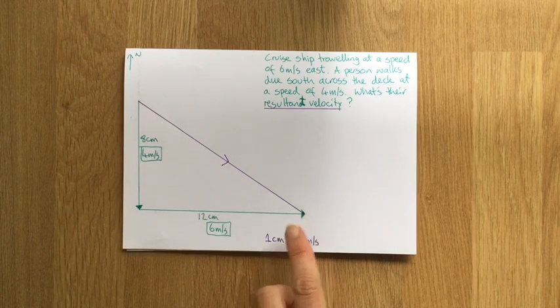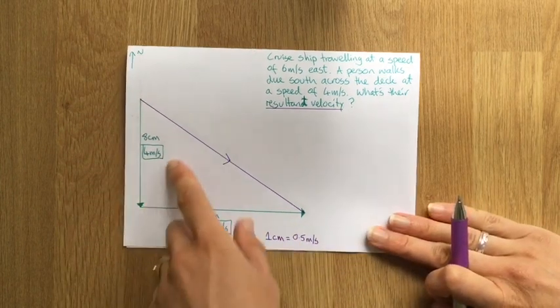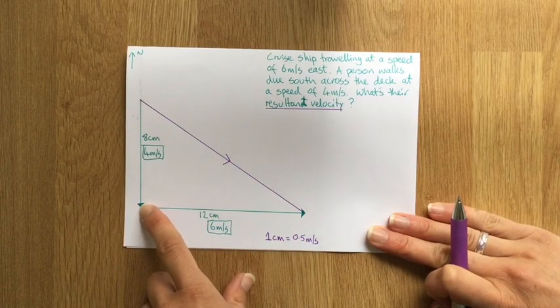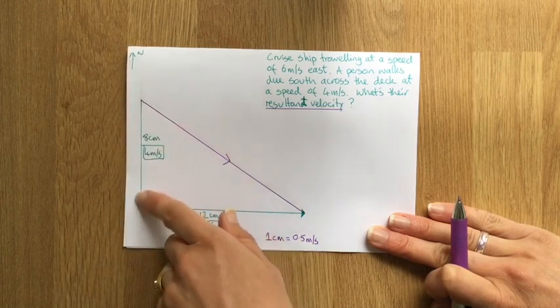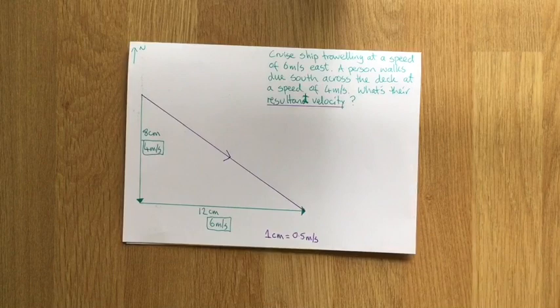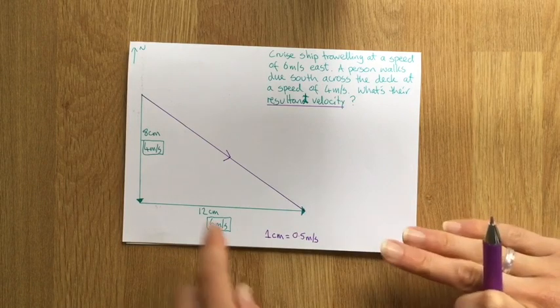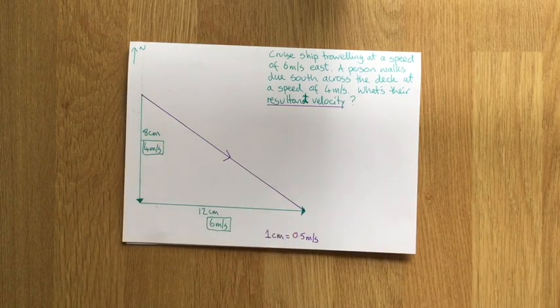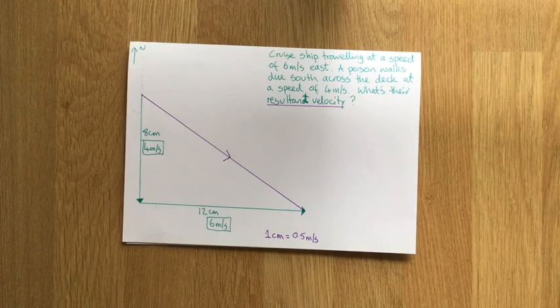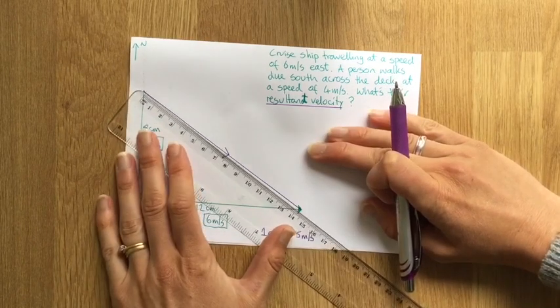So I've drawn up the triangle. One thing you should always remember is these lines are called vectors. They should go top to tail. So the top of this one is matched up with the tail of this one. And if you think about what direction you expect them to go, then you'll be able to work out where your diagonal needs to go. This time we've got 1 centimeter as half a meter per second. So I'll measure the triangle again, this side of the triangle.